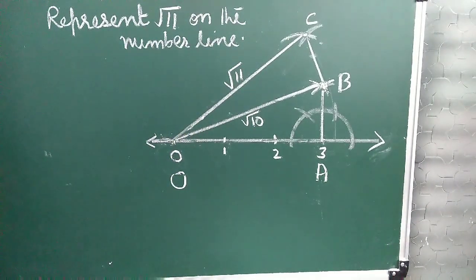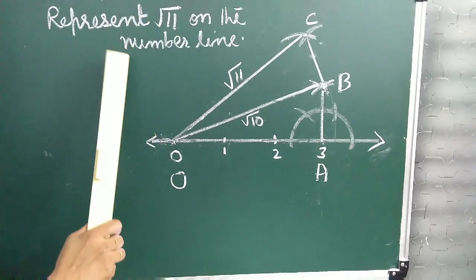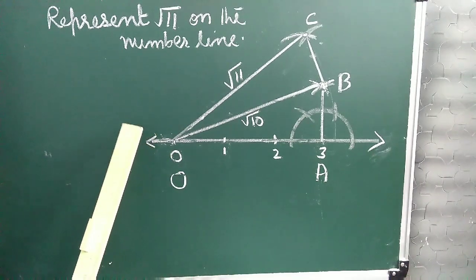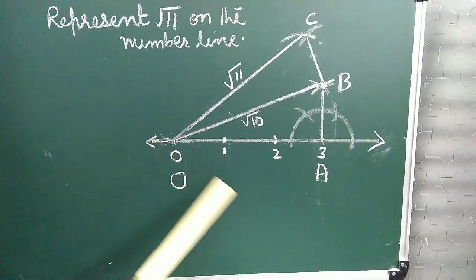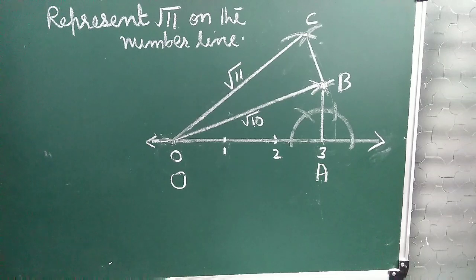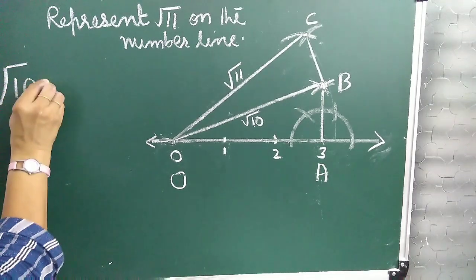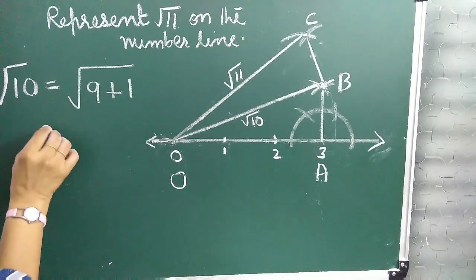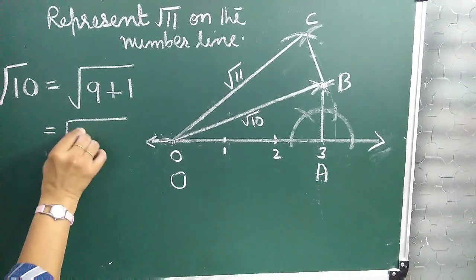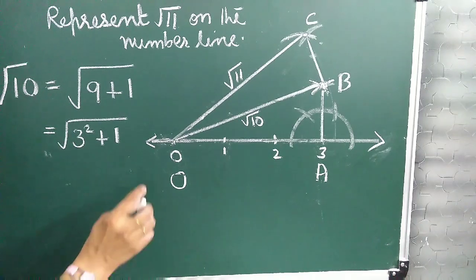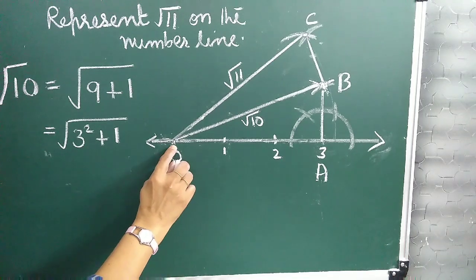Now let us see how to represent root 11 on the number line. To represent root 11, there is no need to draw all the irrational numbers from root 2 to root 10. We know that root 11 equals root of 9 plus 1, which equals root of 3 squared plus 1. So take the base as 3 units.